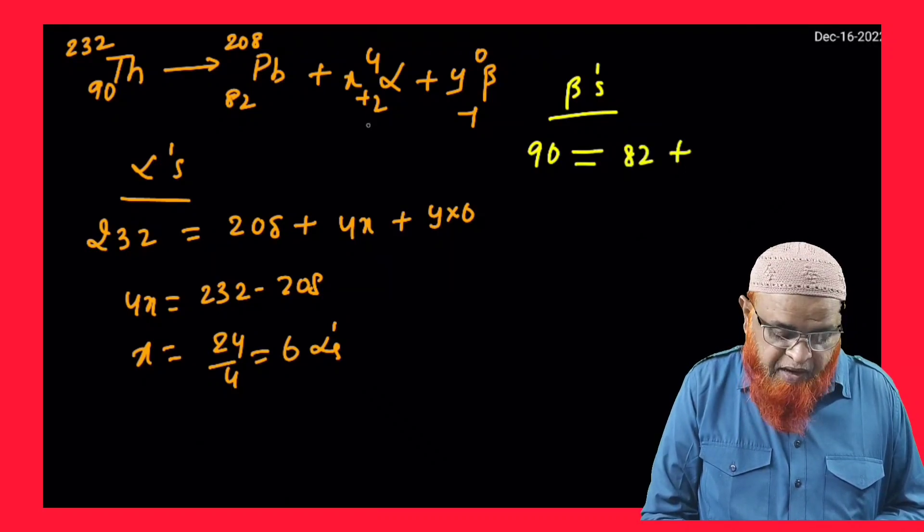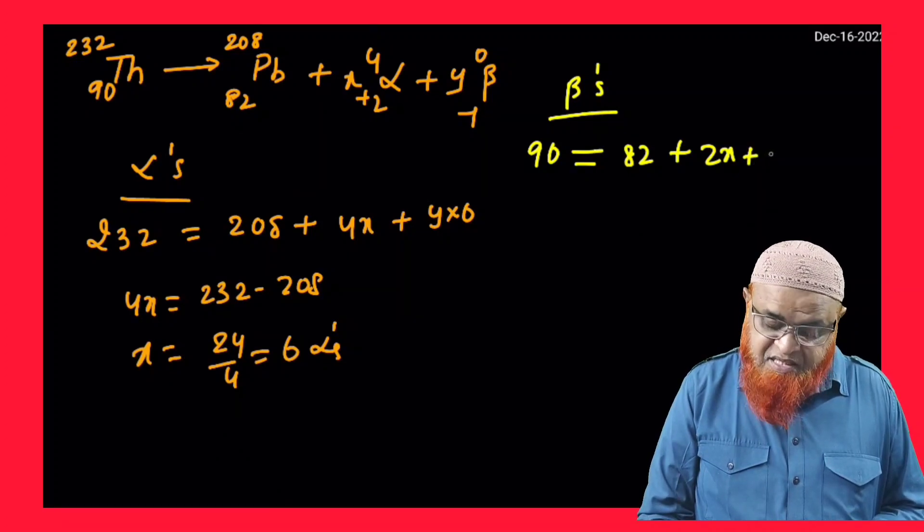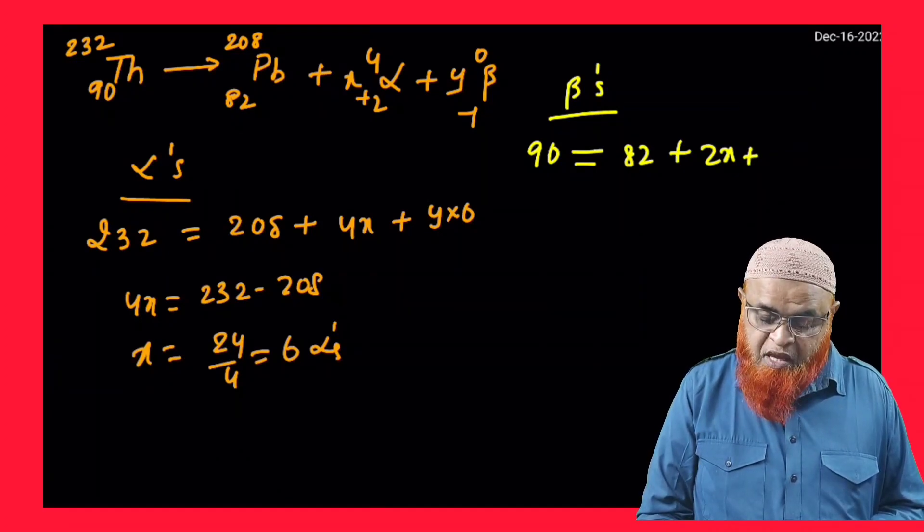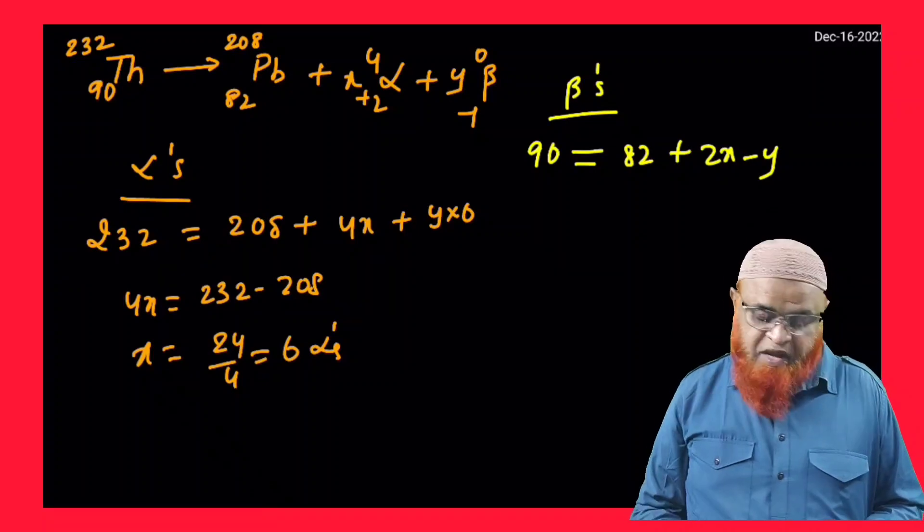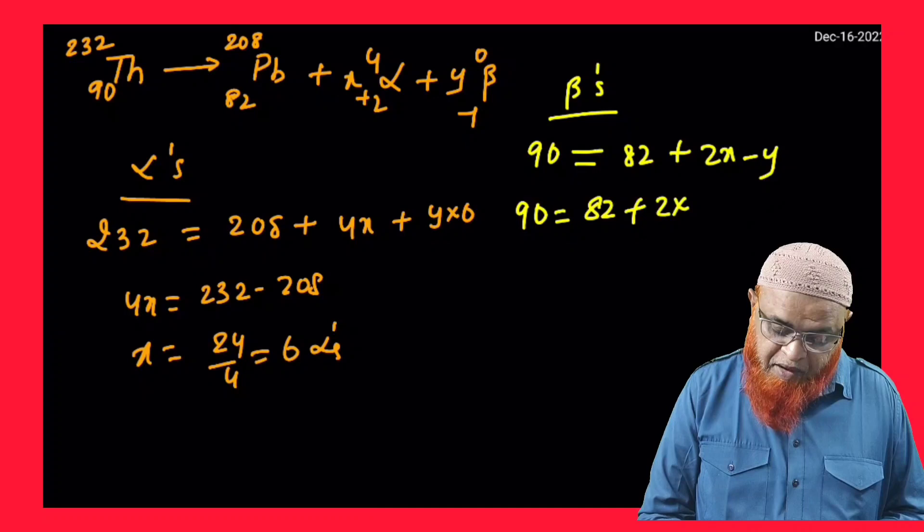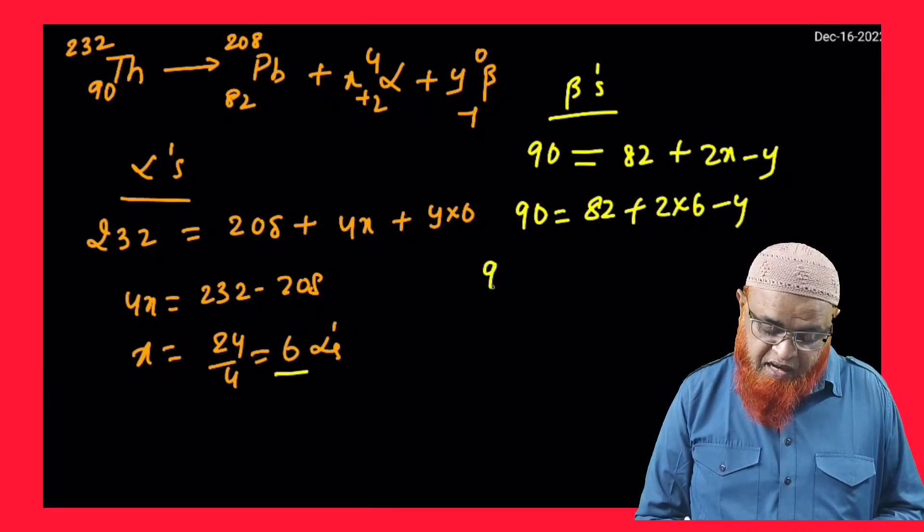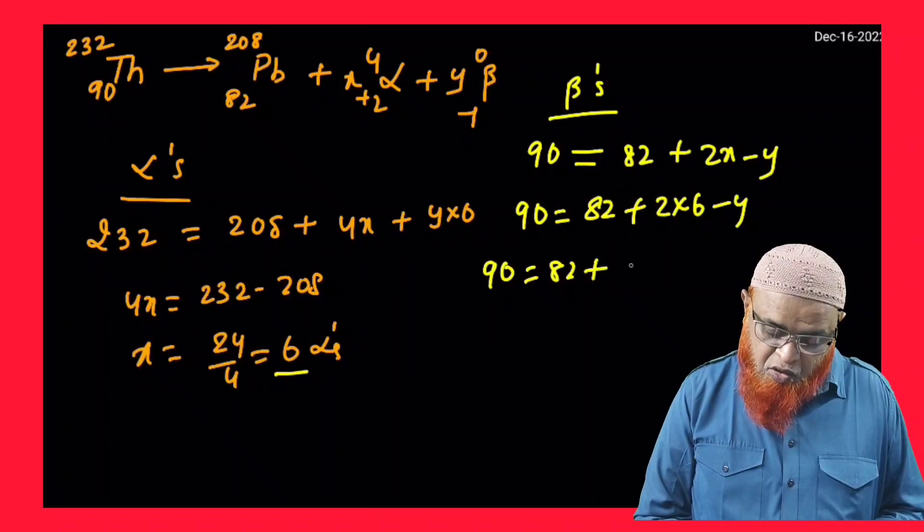...is equal to 82 + x×2, that is 2x, plus y×(−1), which is −y. You can write it as −y. So you just write 90 = 82 + 2×x. The x value we got as 6, so 2×6 − y. You can write like this. So therefore, 90 = 82 + 12 − y.